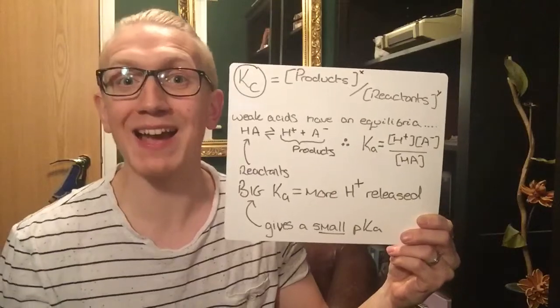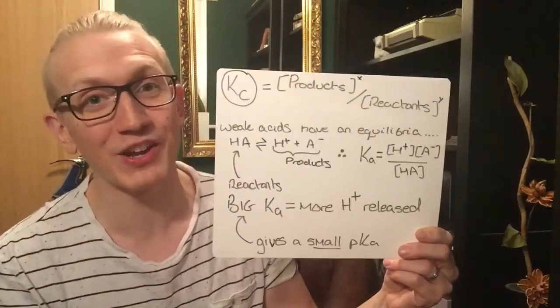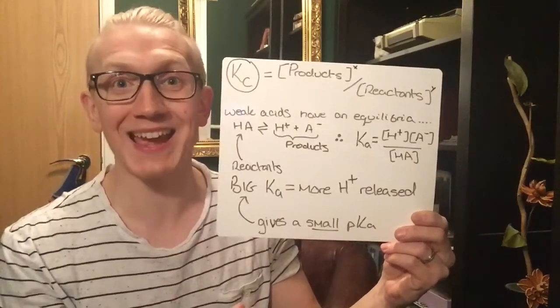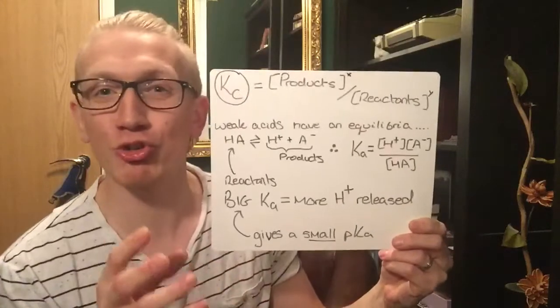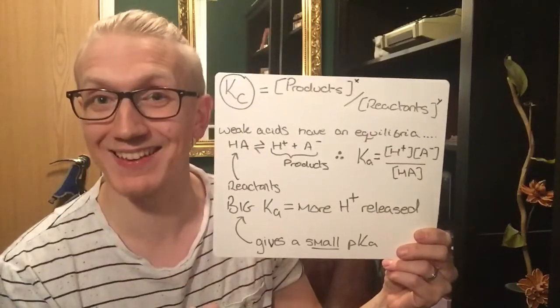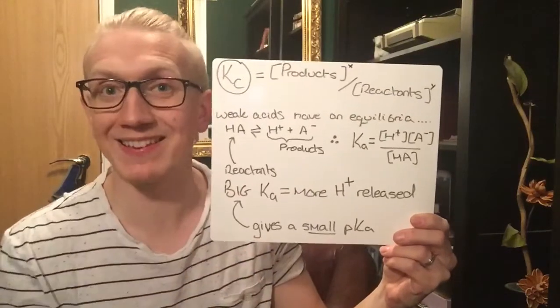If you get one Ka for a weak acid compared to another weak acid's Ka value, the one with the larger Ka must dissociate more. That makes it a stronger weak acid. If it dissociates more, that makes it better at releasing H+ ions.